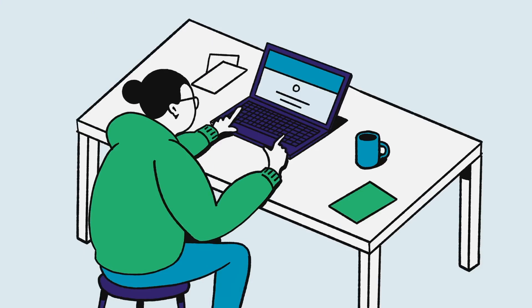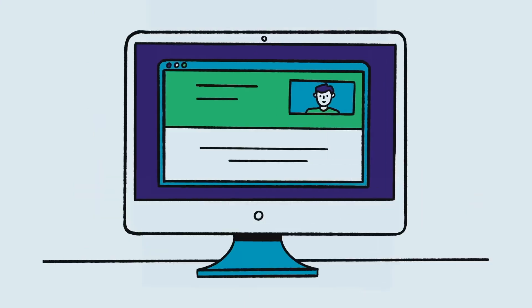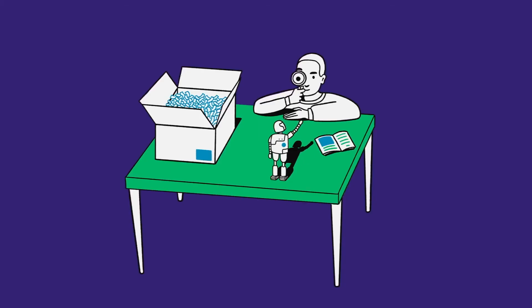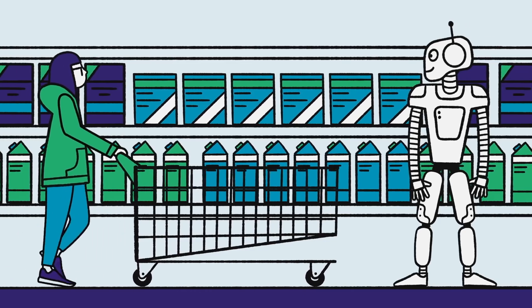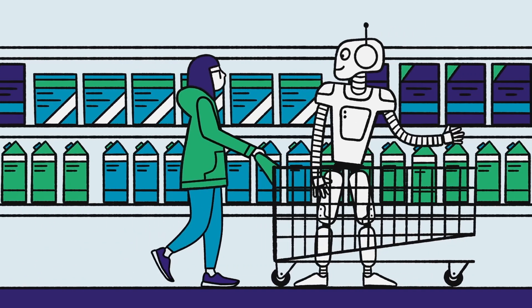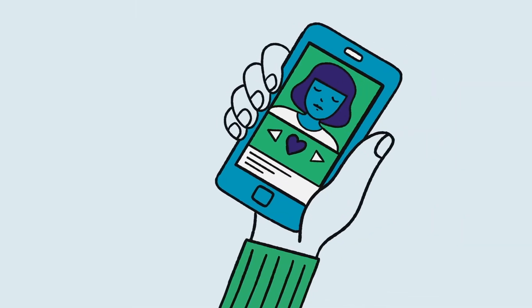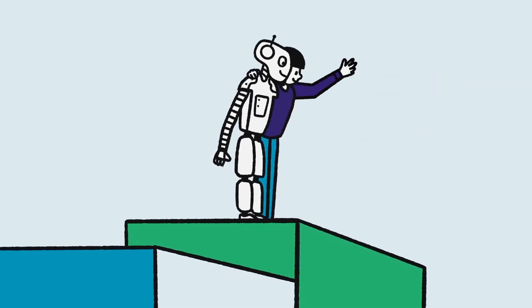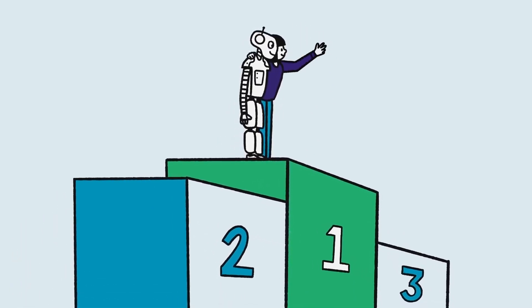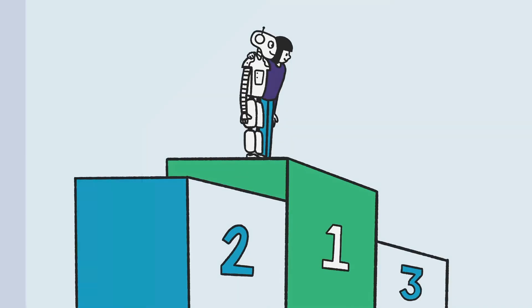In the educational sector, AI helps to individualize learning activities, for example on digital learning platforms. Once we understand how AI works, we can better gauge where it can support everyday activities at home and at work, and where we would rather make our own decisions. AI will not replace humans, but it is getting better and better at supporting us. For this, we need an AI-competent society.